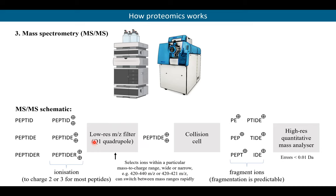At the front end of the mass spec is an ion source which ionizes the peptides. Most often peptides carry charges of two or three, sometimes four. The first functional element after the ion source is the Q1 quadrupole — a low-resolution mass filter. You set a mass range, and only precursor ions falling within that range fly through; everything else is deflected into the vacuum pump. Those precursors then enter a collision cell where they collide with gas molecules, causing fragmentation at peptide bonds, producing N-terminal and C-terminal fragment ions.